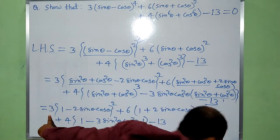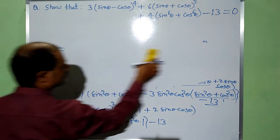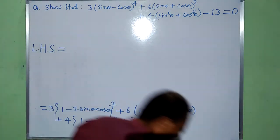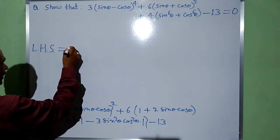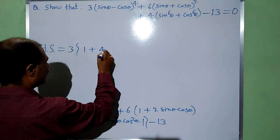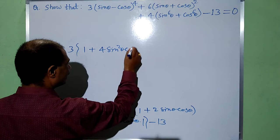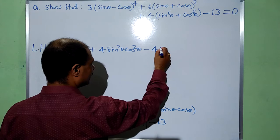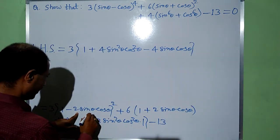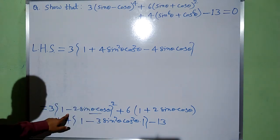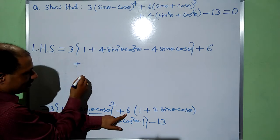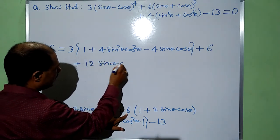Now we have to solve it. It will be equal to 3 times (a − b)² which is a² + b² − 2ab. This will give us 1, this will give us 1, and this will give us 1 plus 6, plus 6 into 2 sin θ cos θ — that is plus 12 sin θ cos θ.